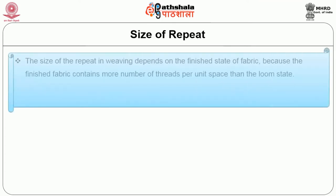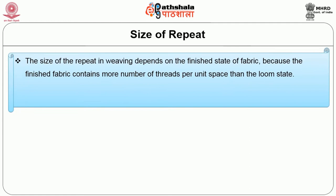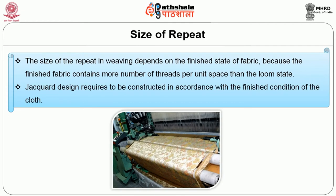The size of the repeat in weaving depends on the finished state of the fabric because the finished fabric contains more threads per unit space than a loom state. When the material is on the loom it is in a stretched condition; the moment tension is removed, the fabric shrinks back, and the design on the fabric also shrinks to a smaller size compared to what it is during weaving. Therefore, a jacquard design needs to be constructed in accordance with the finished condition of the cloth.